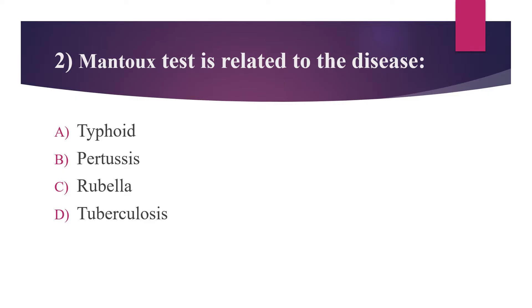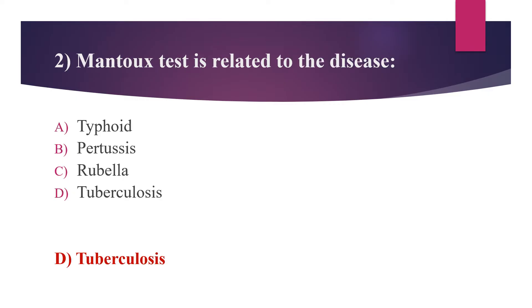Second question: the Mantoux test is related to which disease? Option A: typhoid. Option B: pertussis. Option C: rubella. Option D: tuberculosis. The answer is option D, tuberculosis. The Mantoux test is a method of determining whether a person is infected with Mycobacterium tuberculosis. The procedure includes 0.1 ml purified protein derivative (PPD) containing tuberculin units injected intradermally on the flexor aspect of the forearm. It will form a wheal shape. The site is examined after 48 to 72 hours; an induration diameter of 10 mm or more is considered positive and 5 mm or less is considered negative.